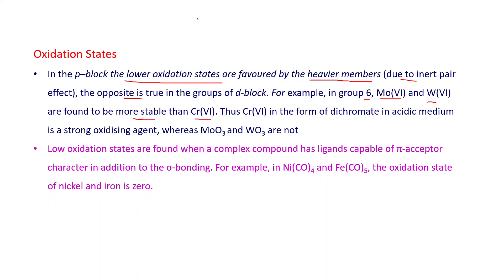That is why chromium(VI) in the form of dichromate in acidic medium is a strong oxidizing agent, whereas molybdenum oxide (MoO3) and tungsten oxide (WO3) are not oxidizing agents, because they show stability of the +6 oxidation state.